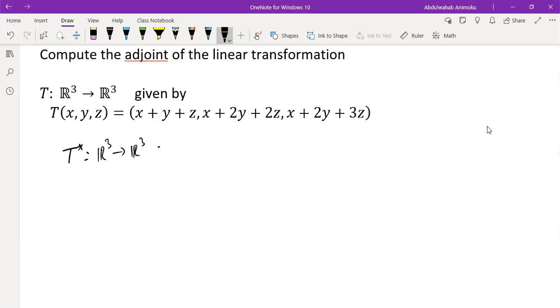The first thing we're going to do is find the matrix of transformation relative to the standard basis for R³. So we need to find T of (1,0,0), T of (0,1,0), and T of (0,0,1).